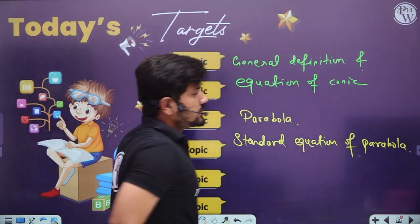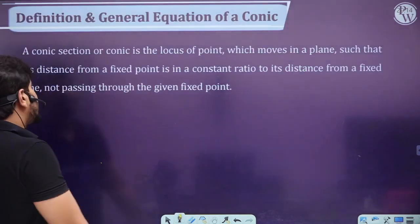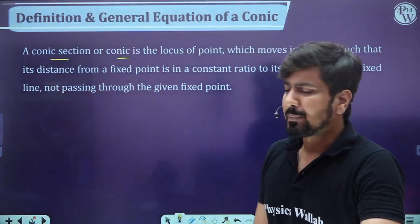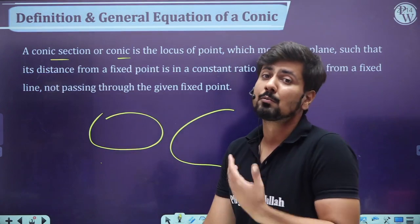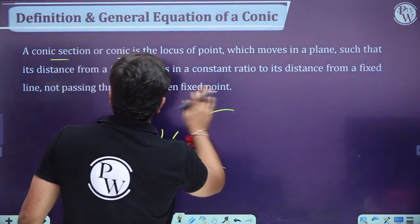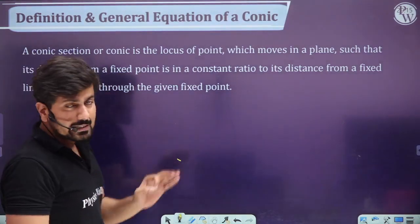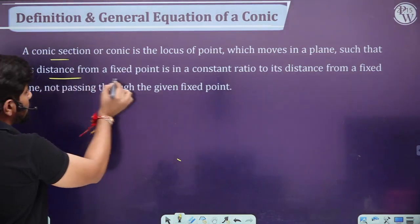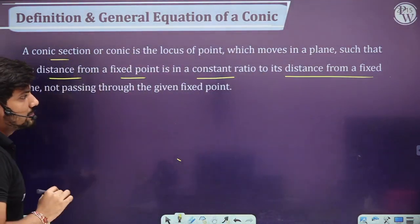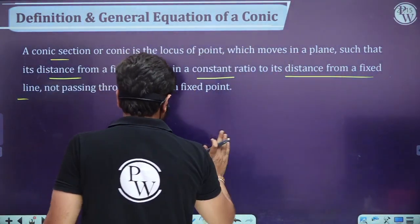Definition of a conic: a conic section is the locus of a point — locus means the path traced. So parabola is a path, ellipse is a path, hyperbola is a path, circle is a path, straight line is a path. A conic section is the locus of a point which moves in a plane such that its distance from a fixed point is in a constant ratio to its distance from a fixed line not passing through the given fixed point.